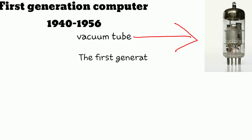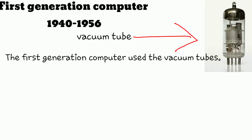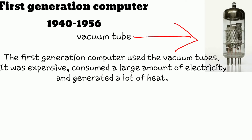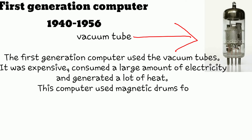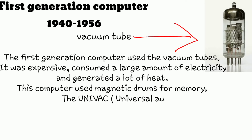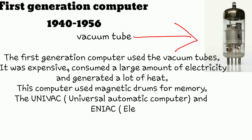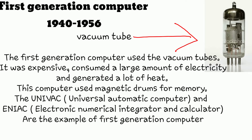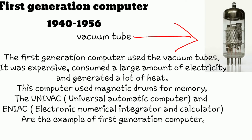Now we will discuss the first generation of computers, 1940 to 1956. First generation computers used vacuum tubes. They were expensive, consumed large amounts of electricity, and generated loads of heat. These computers used magnetic drums for memory. UNIVAC and ENIAC are examples of first generation computers.